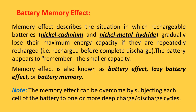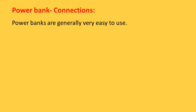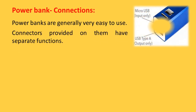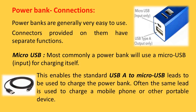Power bank connections: power banks are generally very easy to use. The connectors provided have separate functions — the micro USB is for input, that is to charge the power bank, and the USB Type-A is the large connector used to charge other devices. Most commonly, a power bank will use a micro USB for input, enabling standard USB-A to micro USB leads to be used to charge the power bank — often the same lead used to charge a mobile phone or other portable devices.